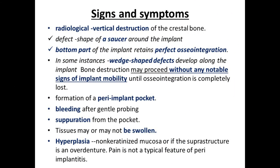Radiologically, you can see vertical destruction of crestal bone. The defect shape is saucer-shaped around the implant. The bottom of the implant retains osseointegration, but the crestal portion has a defect. In some instances, a wedge-type defect is also found. Bony destruction proceeds without notable changes in implant mobility until osseointegration is completely lost. There may also be formation of a peri-implant pocket, bleeding after gentle probing, and suppuration along the pocket.